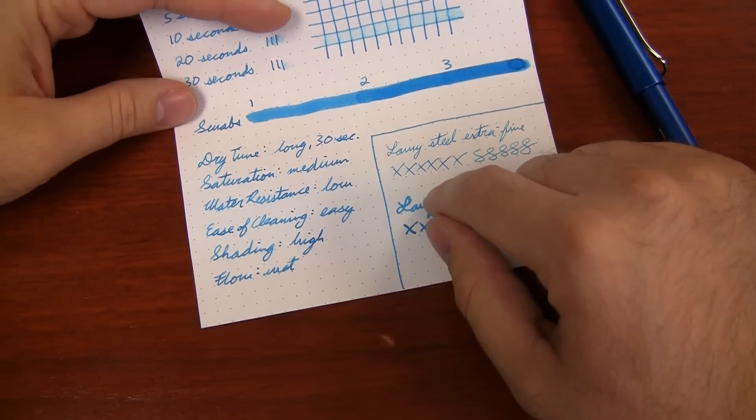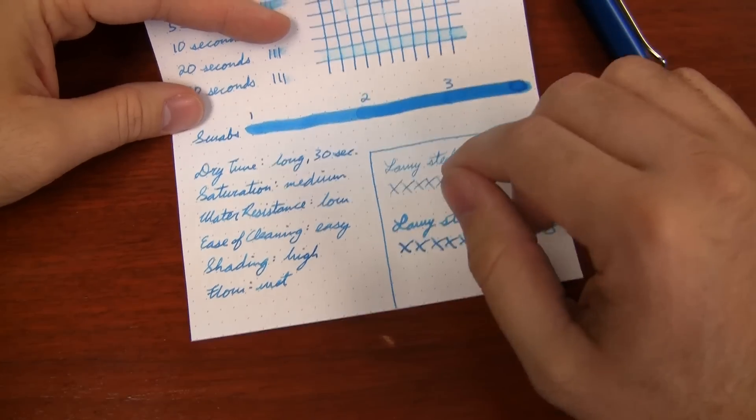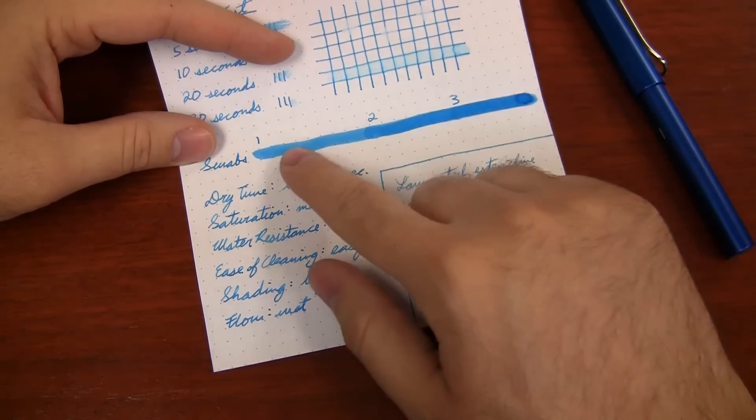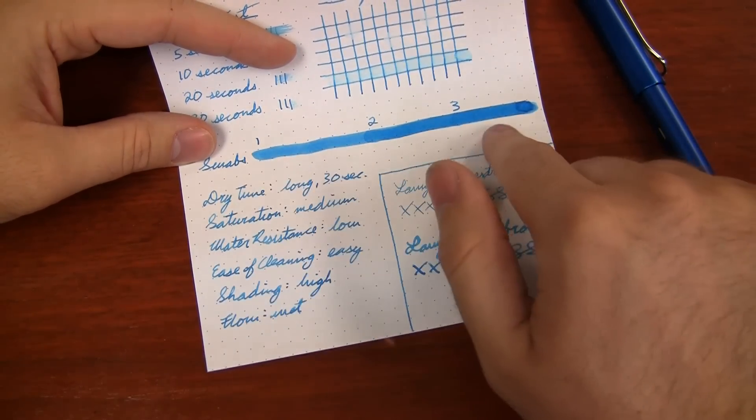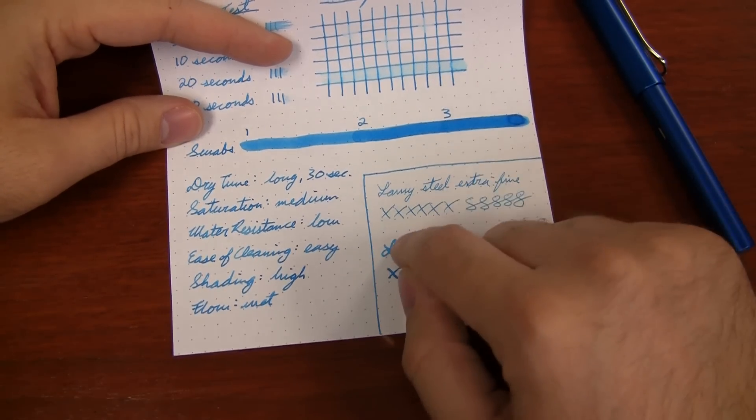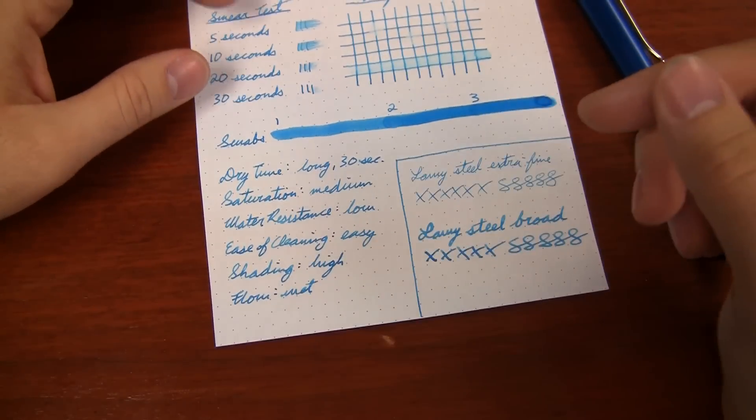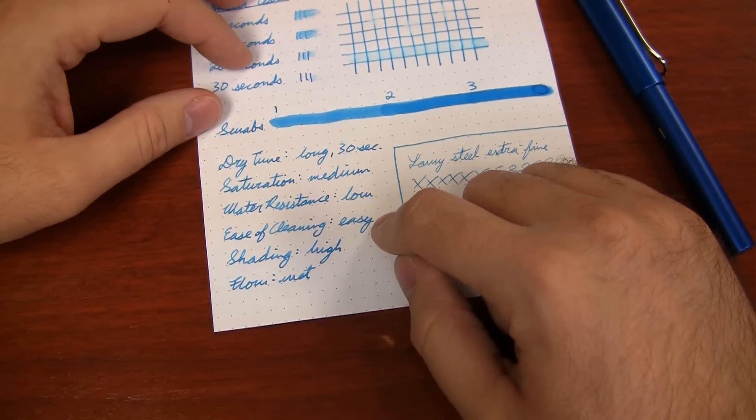The saturation level is pretty low. I gave it a medium rating because you are able to see a huge difference between doing a single swab versus a double and a triple swab. And then where it pulls up here, it gets really dark over there. So it's got some really good shading, especially on the ink resistant paper like this. It is really easy to clean out of the pen, which is not necessarily a given when you have blue inks.